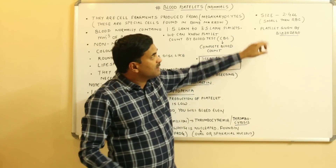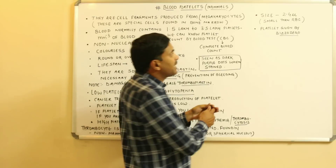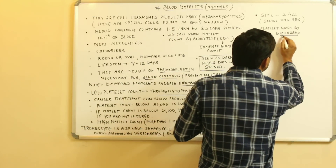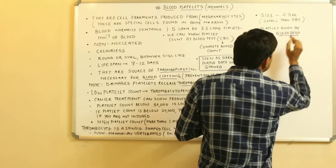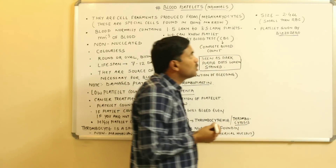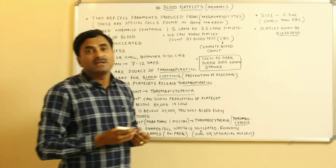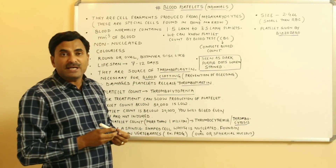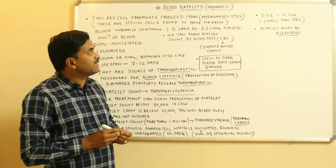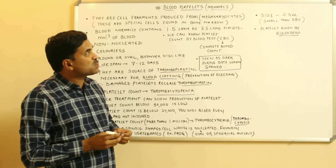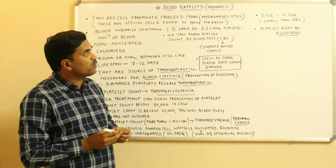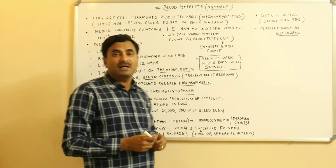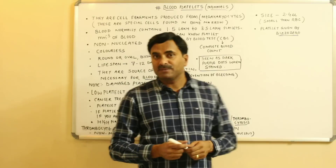The name 'platelet' was given by a scientist known as Visuero, who coined the term. The size of blood platelets is 2 to 4 microns, and they are smaller than red blood cells (RBCs).